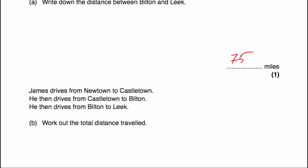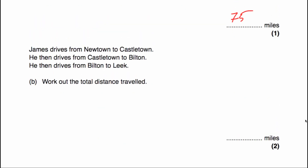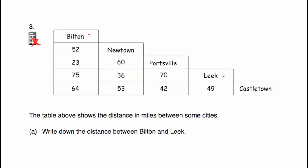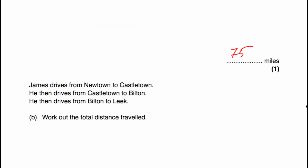Part B says James drives from Newtown to Castletown, then from Castletown to Bilton, then from Bilton to Leek, and we've been asked to work out the total distance he travels. Let's work out the distance from Newtown to Castletown first — if we come down and across, that's 53 miles.